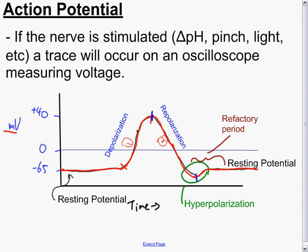The action potential. If we were to be measuring the potential across the membrane, as was just shown, and that we have a nerve stimulation, suggests a change in pH, a pinch, a light, something that causes it to actually react, we will get a trace on an oscilloscope. The potential will go from negative 65 millivolts to plus 40.